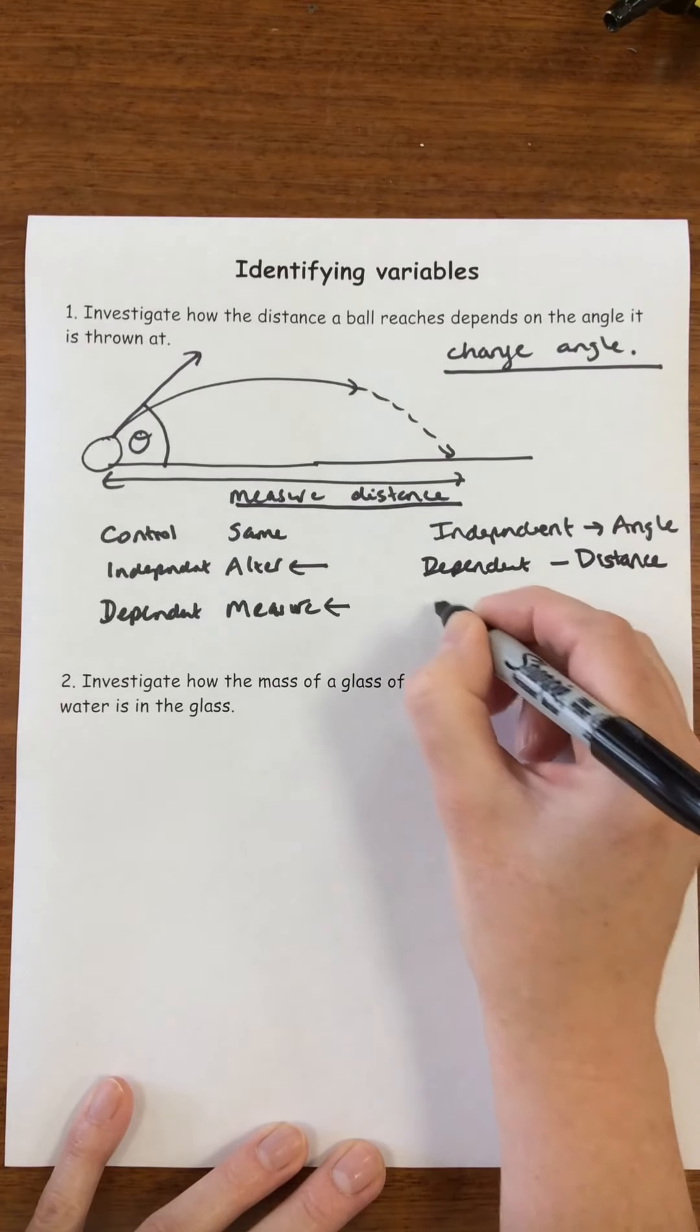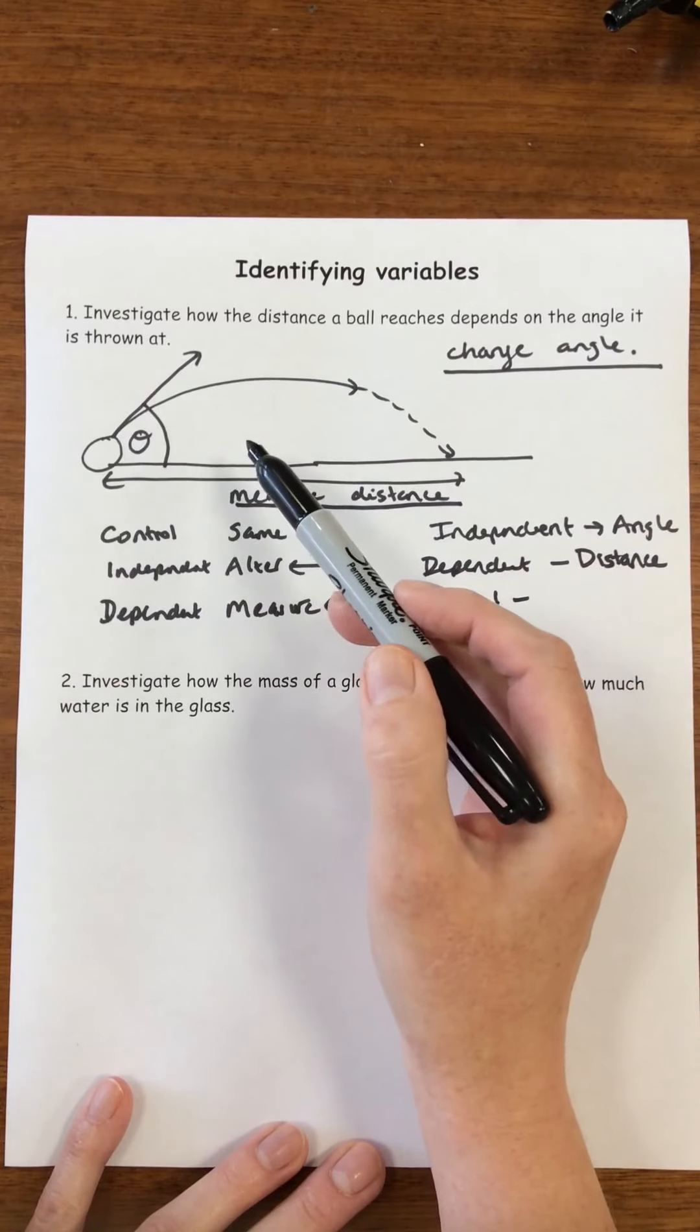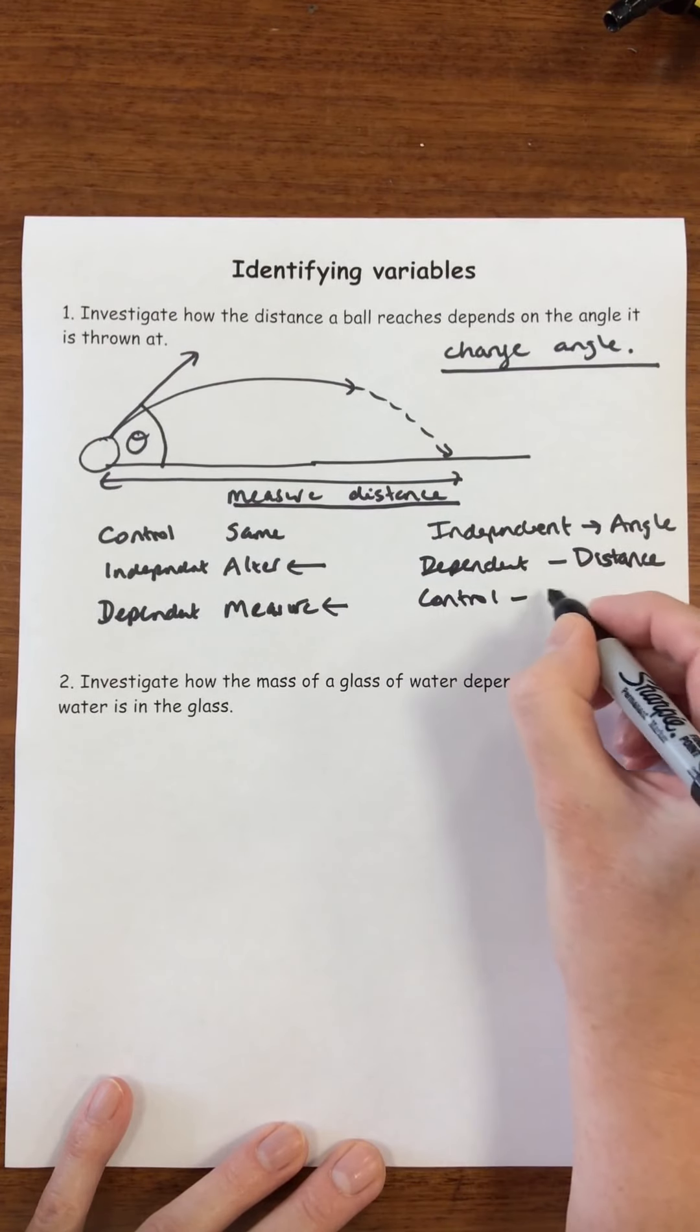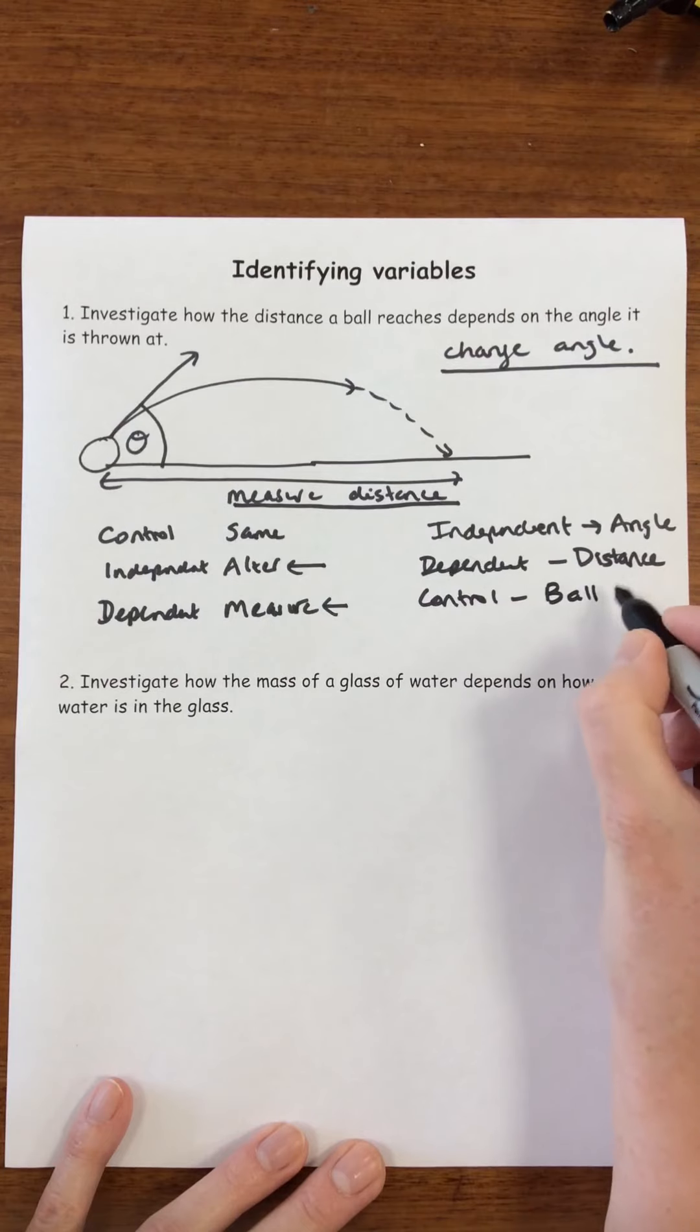Last of all we need to think about what our control variable will be. Each time we throw this ball it's important that we use the same ball. So we may write down that our control variable will be the ball itself, but to be a bit more specific we'll say a ball of the same mass.